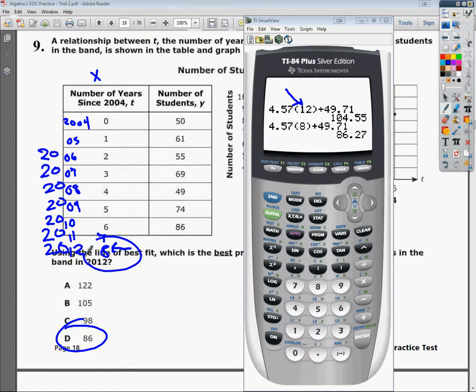So make sure you plug in the eight so it matches the table. You get your final answer of 86 being your best prediction of where it's going to be in 2012. So sorry about the mistake, but I'm sort of glad that it happened because it may keep you from making it.